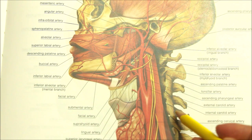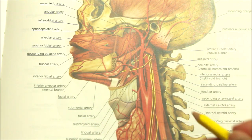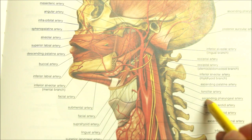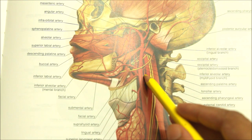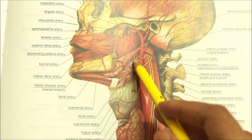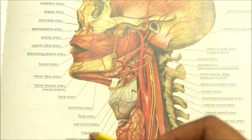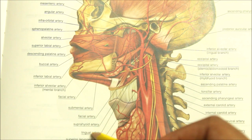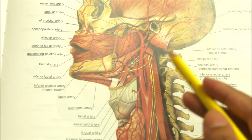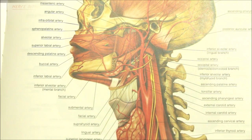Now let's look at the blood supply of the pharynx. First is the ascending pharyngeal artery. Then come the ascending palatine and tonsillar arteries. Then come the dorsal lingual branches of the lingual artery, and finally the greater palatine, pharyngeal and pterygoid branches of the maxillary artery.